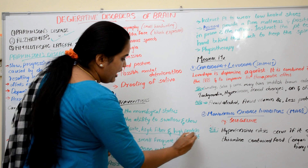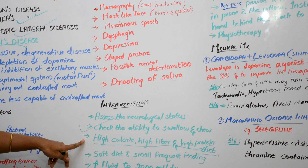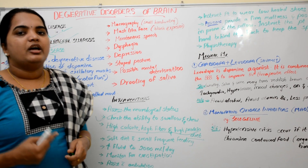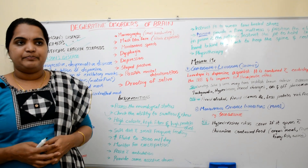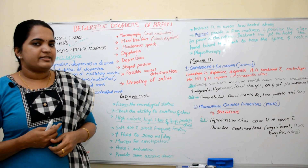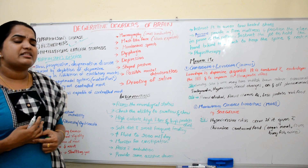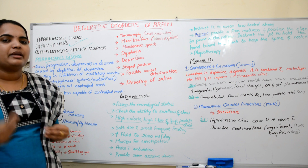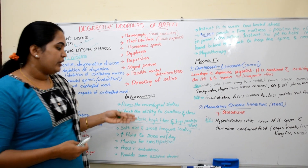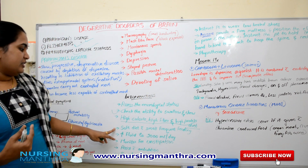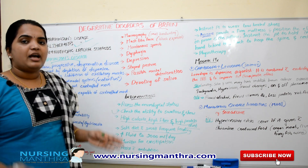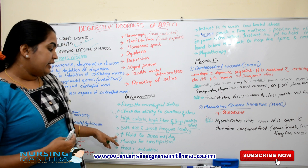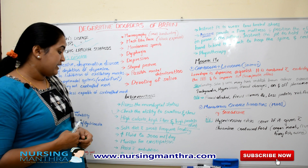Provide a high-calorie, high-fiber, high-protein diet. One exam question asked which food to provide to a Parkinson's patient — the answer was milkshake, as it requires no chewing. Provide soft diet with small, frequent feedings rather than large meals. Increase fluid intake to 2000 ml per day.